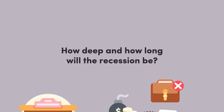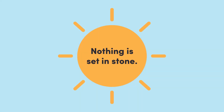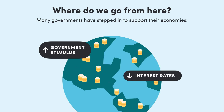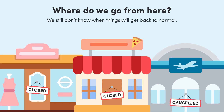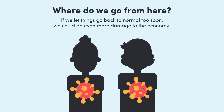So where to from here? This all sounds a bit doom and gloom, but nothing's set in stone. Governments around the world have stepped in to support companies and individuals, and they've dropped interest rates to record lows to help people pay their debts. Whether it's enough to prevent more businesses going under and an unemployment crisis is something we won't know for a while. We also don't know how long it will be until we can allow the economy to go back to normal — it all depends on the spread of the virus. If we allow things to go back to normal too quickly, we could do more damage to health and the economy than the lockdowns are.